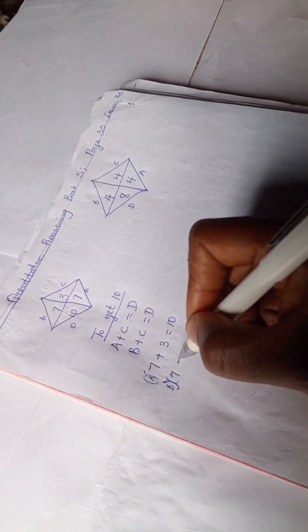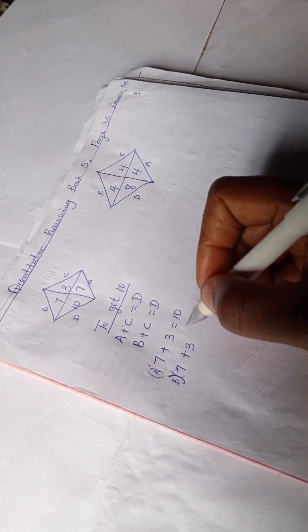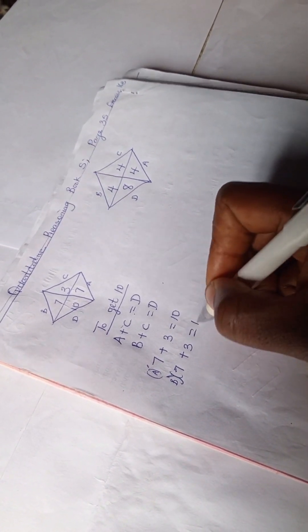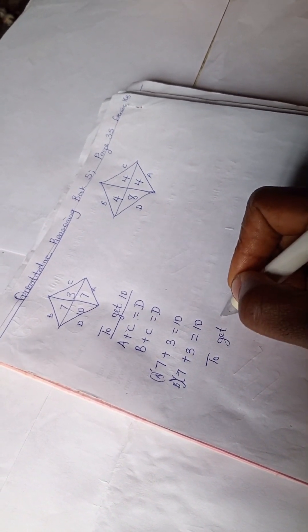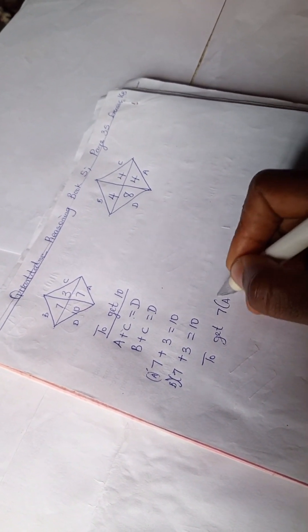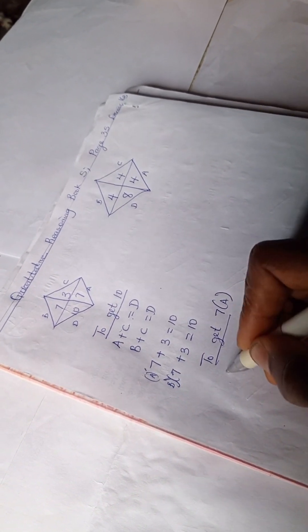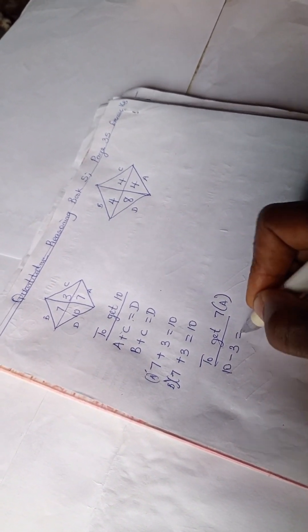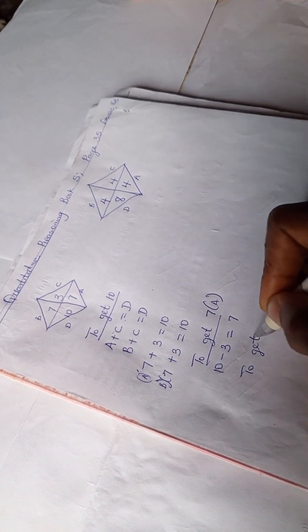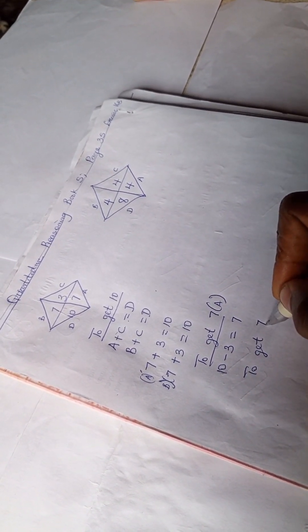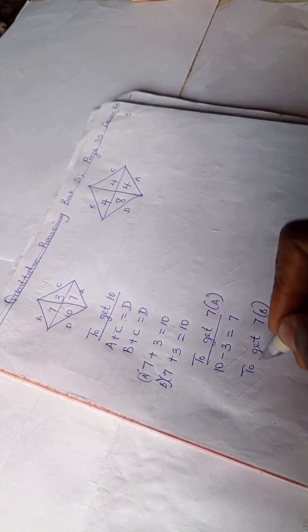And the other seven, which is B, seven plus three, seven plus three equals ten. All right, so let's try to get seven, that's seven E. Okay, so we have ten minus three is seven.